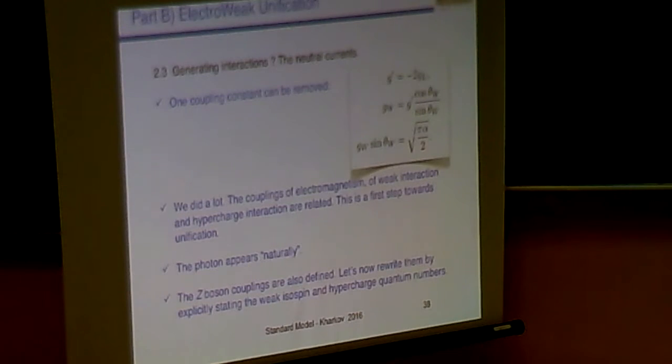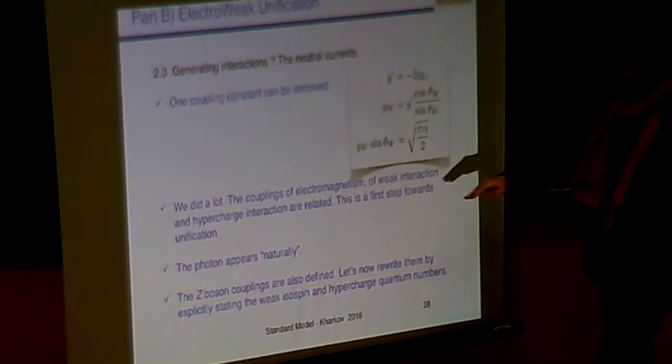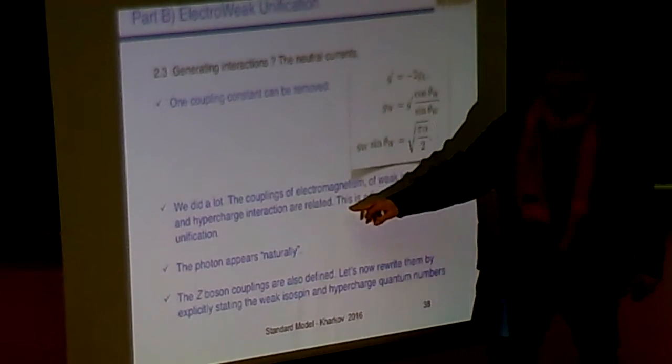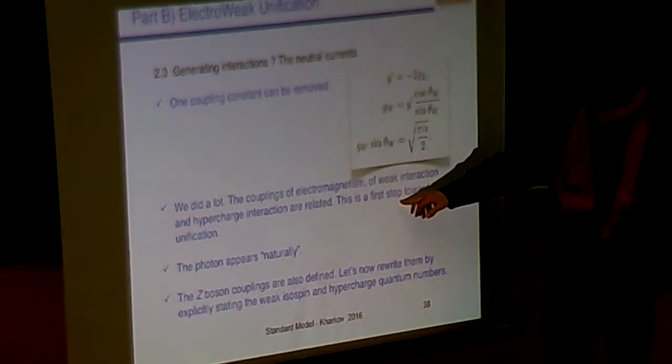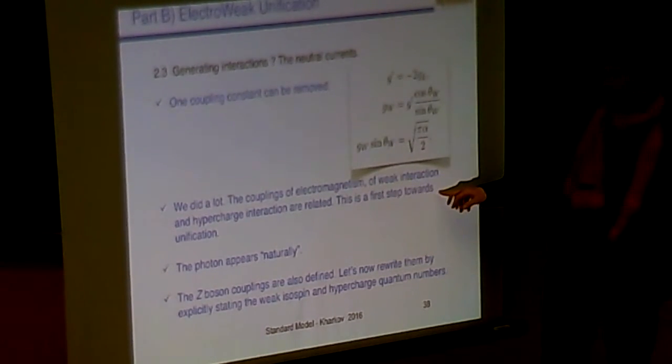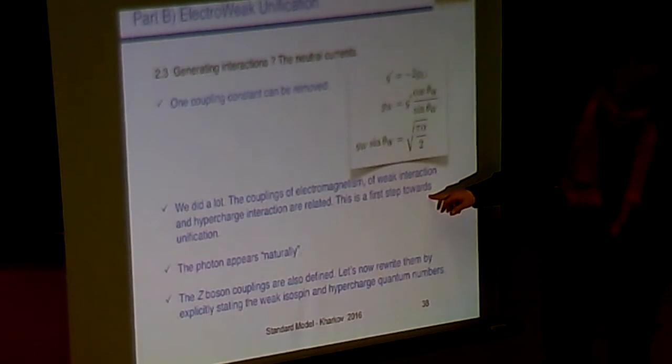And so, we made so much here. That's the electric unification. Why? We have removed one coupling constant. We have related the electromagnetic constant to the weak coupling constant. And yet, the price that we are paying is that we are introducing a unique quantity.